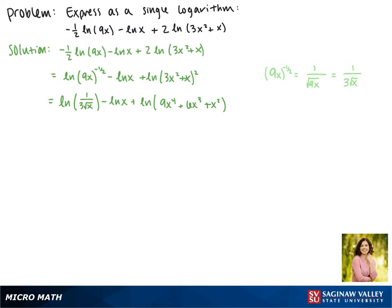Now we can combine the first two terms. Since these are logs with the same base being subtracted, they divide. Note that dividing by x is the same as multiplying by 1 over x. So we'll write this as the natural log of 1 over 3 times the square root of x times 1 over x, and then plus the natural log of 9x to the fourth plus 6x cubed plus x squared.